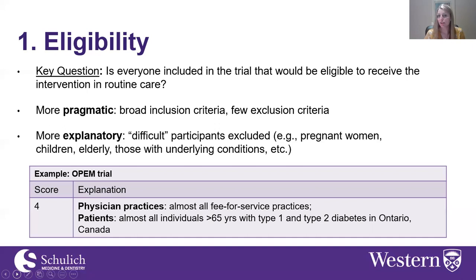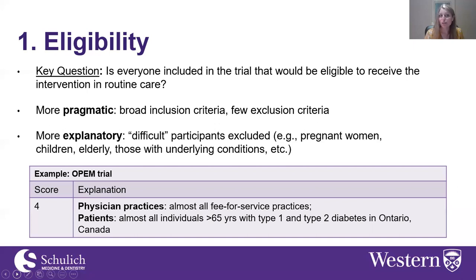In the OPEN trial, eligibility must be assessed at two separate levels: the cluster level and the individual patient level. Almost all fee-for-service family practices were included, and most physicians were compensated using this payment model. Almost all individuals over 65 with type one and type two diabetes in Ontario were included. However, the intervention was targeted at those over 50, but administrative databases only had prescribing data for patients over 65, so those aged 50 to 65 were excluded — resulting in a slightly more explanatory design decision and a score of four instead of five.